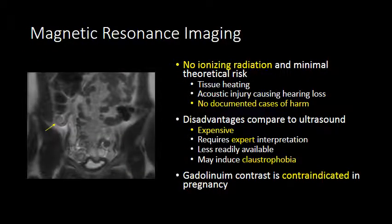MRI is the second-line modality used in pregnant women. There's no ionizing radiation, and there is some minimal theoretical risk. MRI can result in tissue heating, and the MRI machine is extremely loud and could theoretically damage the developing hearing of the fetus, but there are no documented cases of harm. The disadvantages of MRI compared to ultrasound are that it's very expensive, requires expert interpretation, is not as available, and oftentimes patients become claustrophobic. An MRI takes 30 minutes up to an hour inside a very thin tube.